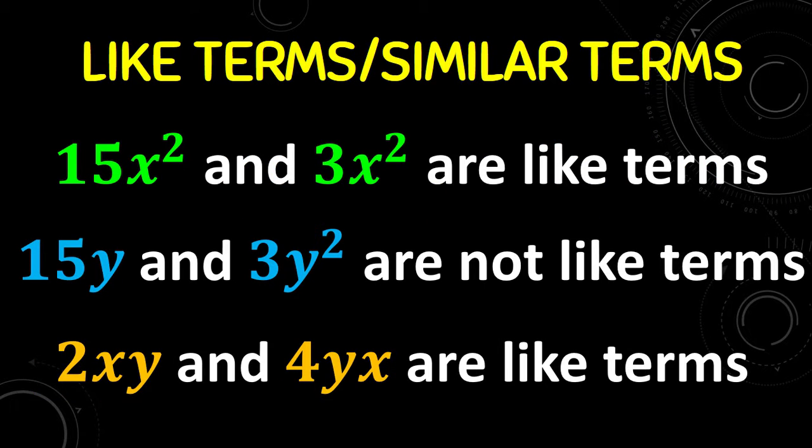Another example is 15x² and 3x². They are like terms because they have the same variable x, and the same exponent 2. Another example is 15y and 3y² — they are not like terms although they have the same variable, because they have different exponents. Another one is 2xy and 4yx — they are still like terms even though the arrangement of the variables is different, because x and y each have 1 as their exponent.